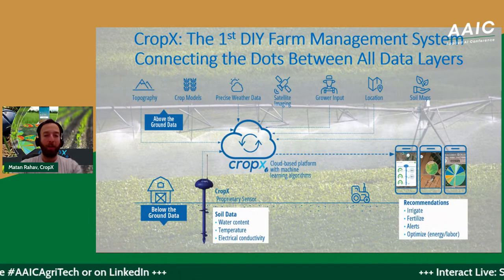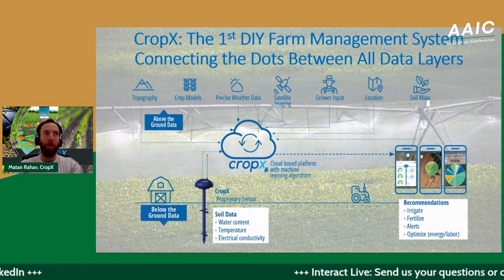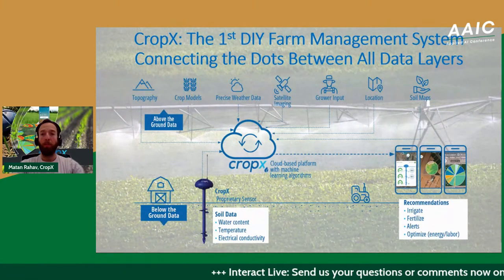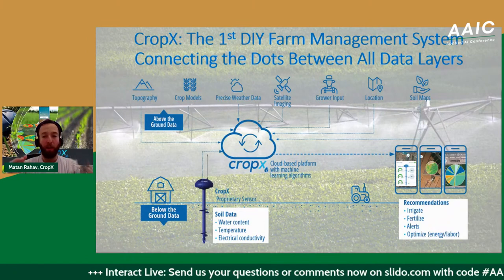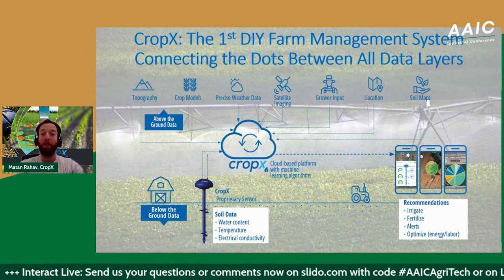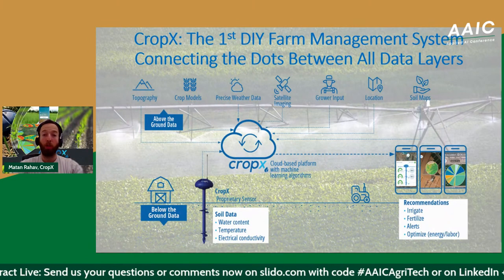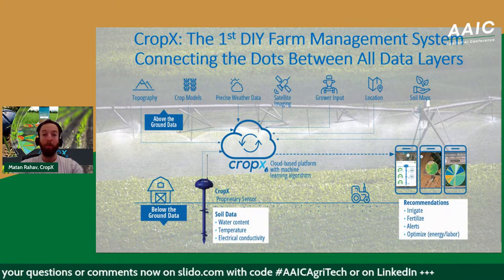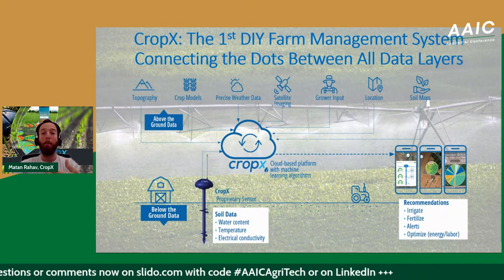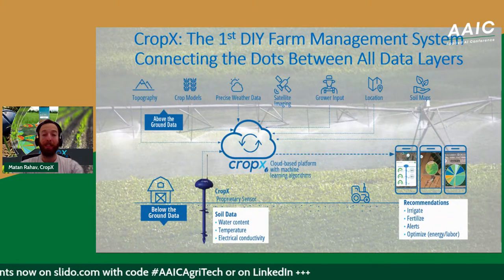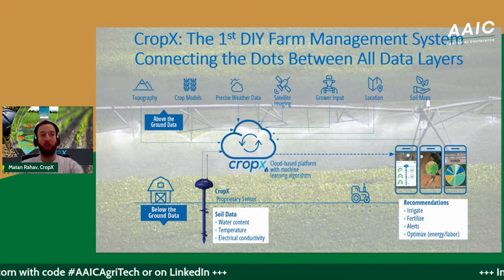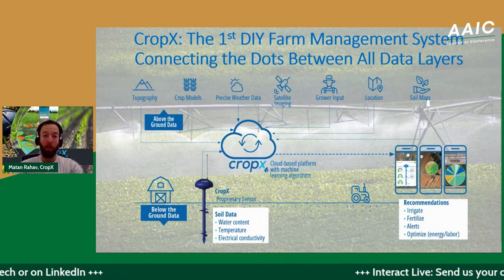The soil sensors collect soil data transmitted directly to the cloud via SIM card or other connectivity solutions like LoRaWAN, Sigfox, or even satellite. We automatically integrate it with above-ground data layers: topography, crop models developed in-house, weather data like wind speed, evapotranspiration, precipitation, humidity, satellite imagery. We have an entire remote sensing team developing our own proprietary in-house optical and radar image processing algorithms — not just standard NDVI but far more. User inputs, soil maps, hydraulic models — everything gets crunched in the cloud using advanced machine learning and AI to provide bottom-line actionable insights via our iOS, Android, and web app.